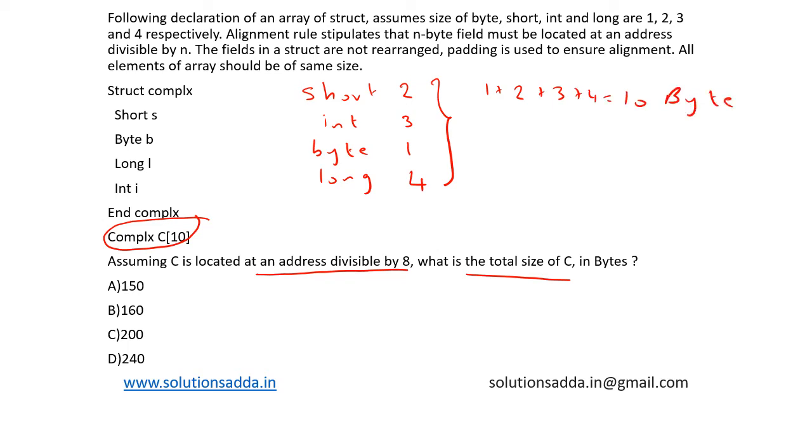And the criteria given here is that the address that is located by c should be divisible by 8. So to have an address that is divisible by 8, the address should be a multiple of 8. So the next closest byte that is a multiple of 8 is 16. So the total structure should be of size 16 bytes.